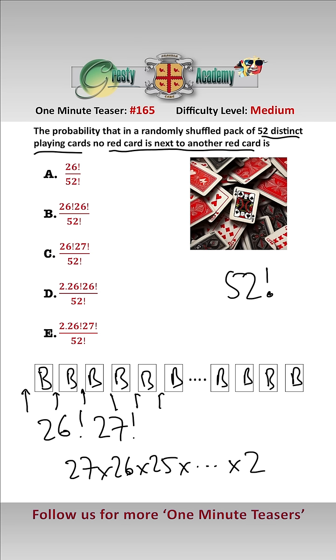Therefore, the probability is 26 factorial times 27 factorial over 52 factorial, which is answer C.